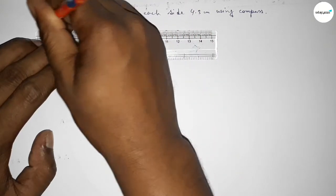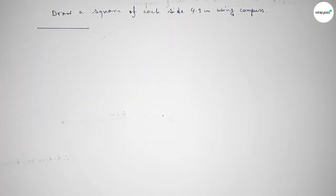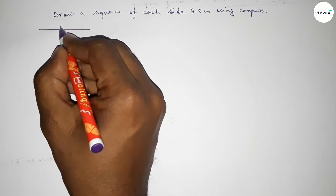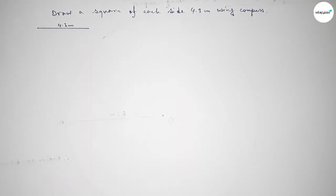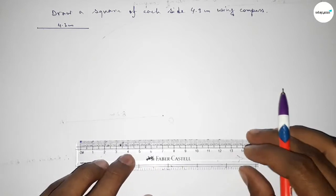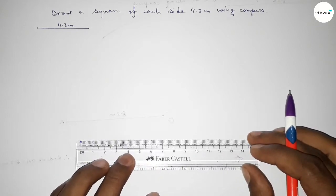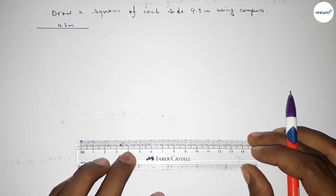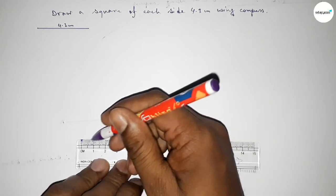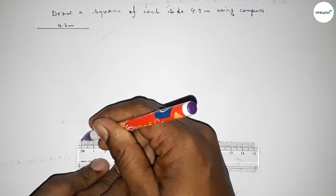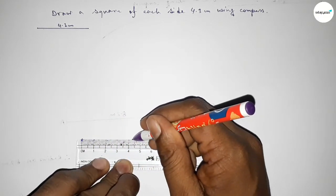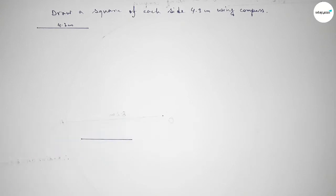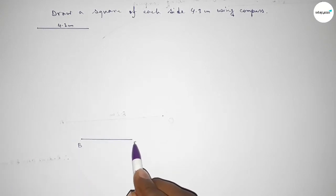Again, we have to draw here a second line of length 4.3 centimeters: 0, 1, 2, 3, 4 — and this is the 4.3 centimeter line. Now taking here point B and here point C.